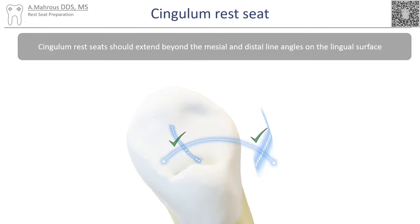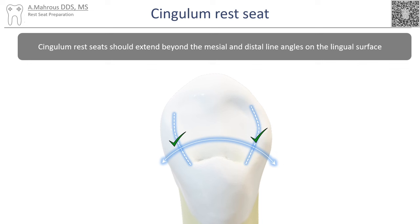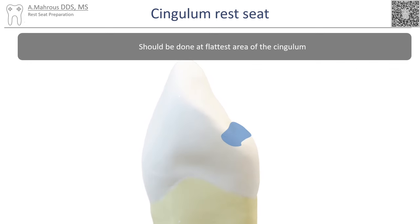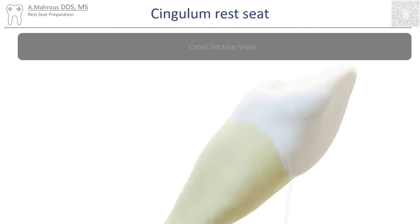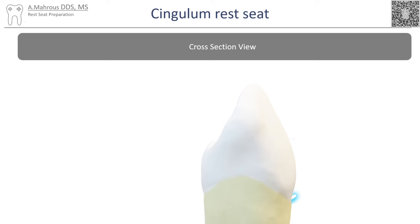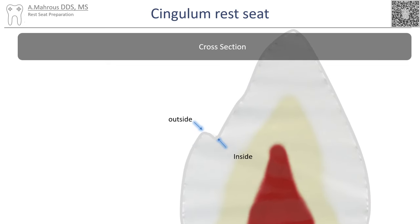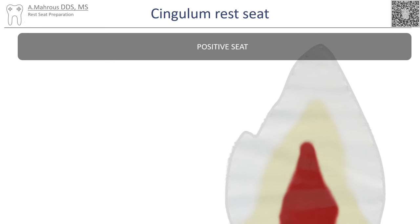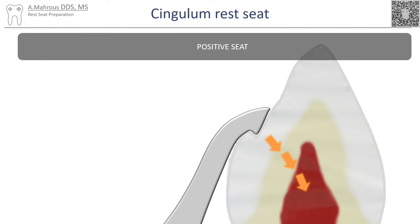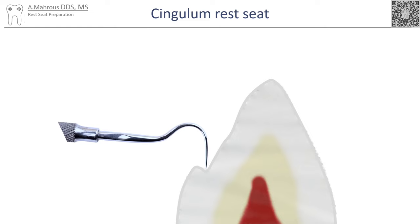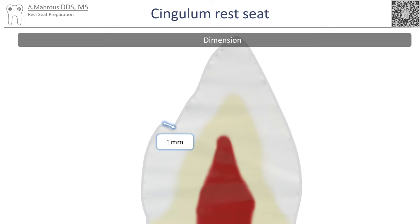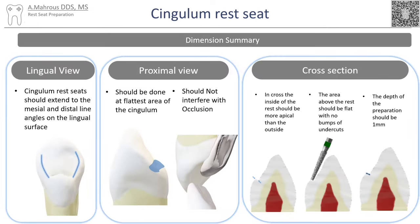Cingulum rests come in many different shapes: they can be U-shaped, V-shaped, or flat, depending on the tooth they are used on. Regardless of the shape used, cingulum rests should not go beyond the mesial and distal line angles of the lingual surface. Cingulum rests should also be made at the flattest area of the cingulum, they should not interfere with occlusion. In cross-section, the inside of the rest seat should be more apical than the outside — this creates the positive seat that directs the occlusal forces of the rest towards the long axis of the abutment tooth.